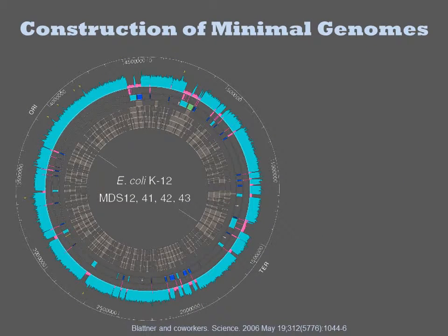There have been extensive efforts to define the minimal chassis needed to sustain life, which to a first approximation is these 3,000 genes. One study by Blattner involved removing many chunks of the K-12 genome to whittle it down to its minimum.